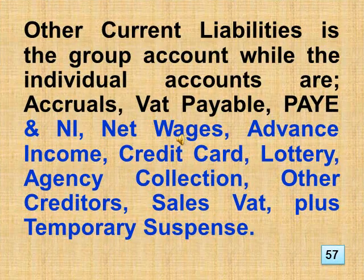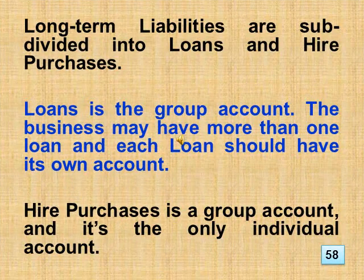Other current liabilities is the group account while the individual accounts are: accruals, VAT payable, PAYE and NI, net wages, advance income, credit card, lottery, agency collection, other creditors, sales VAT, plus temporary suspense. Long-term liabilities are sub-divided into loans and hire purchases. Loans is the group account; the business may have more than one loan and each loan should have its own account. Hire purchases is a group account and it's the only individual account.